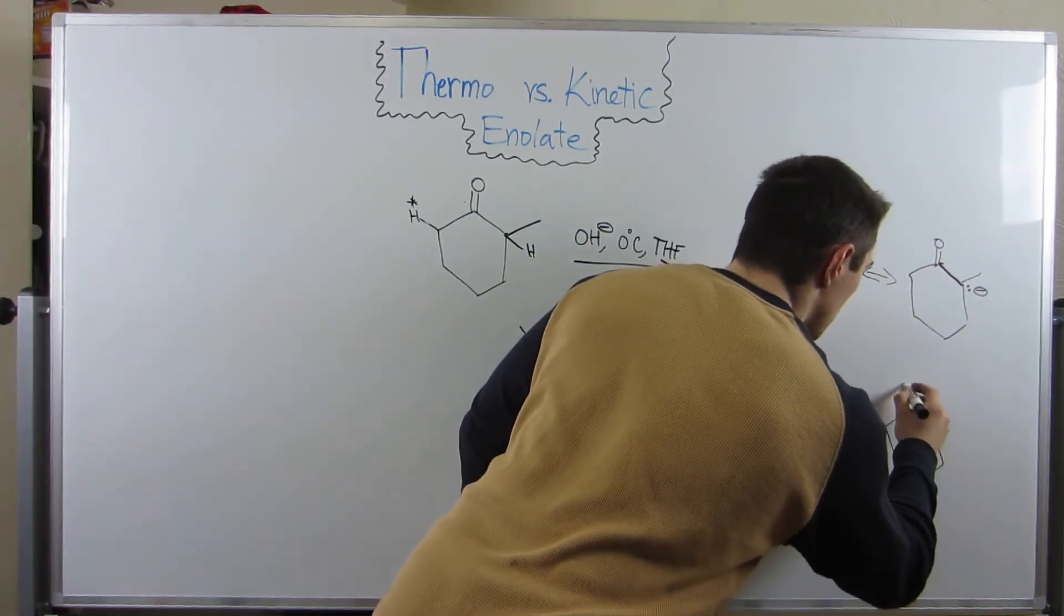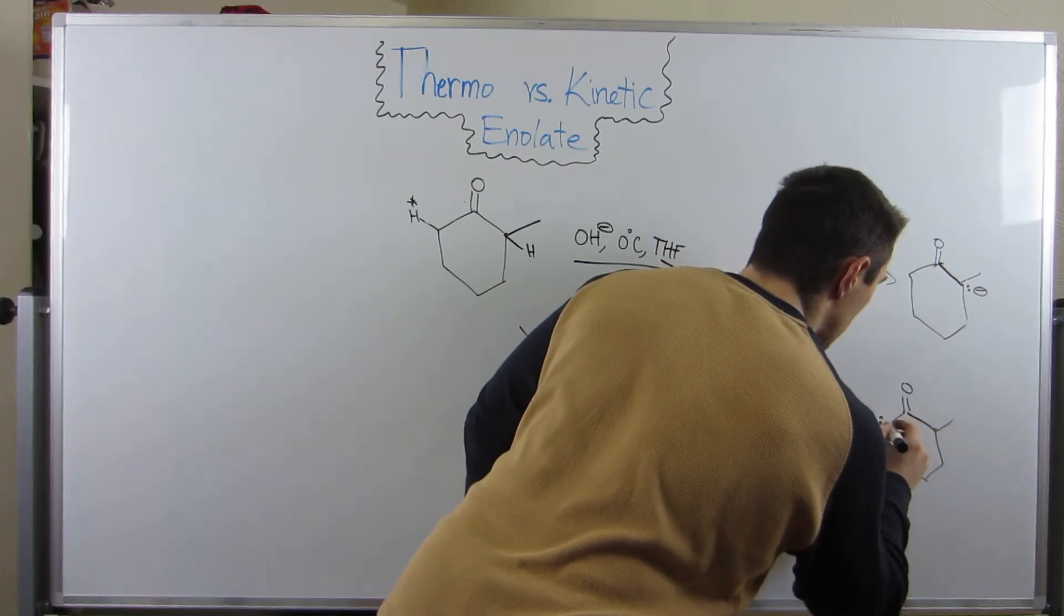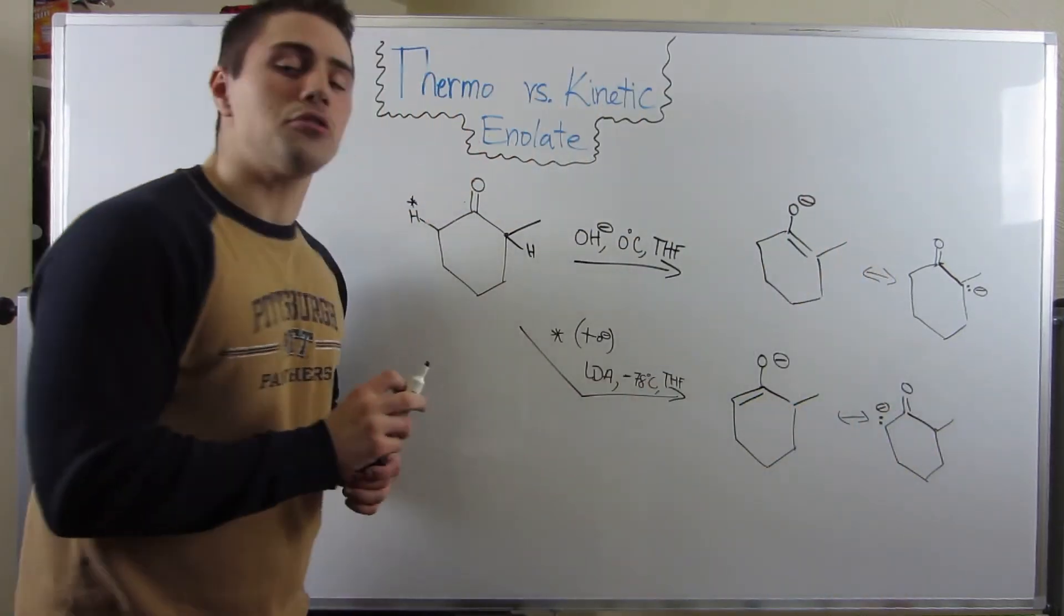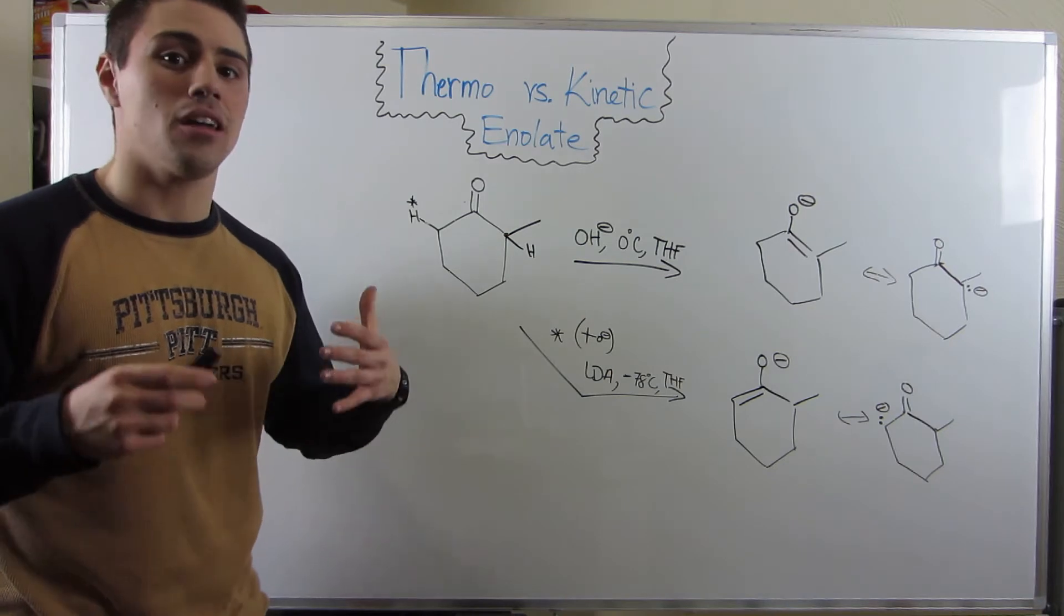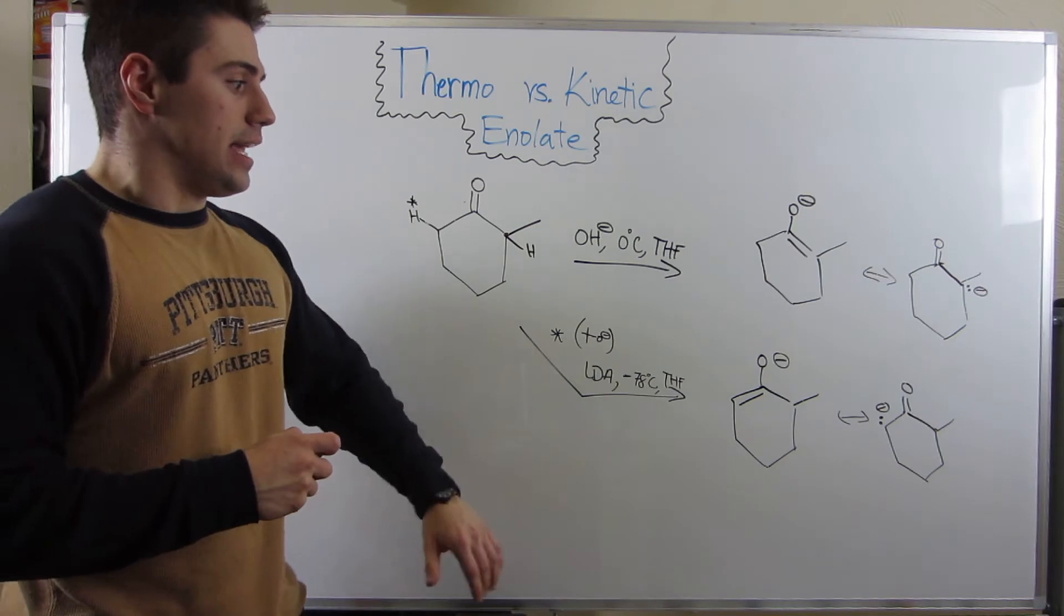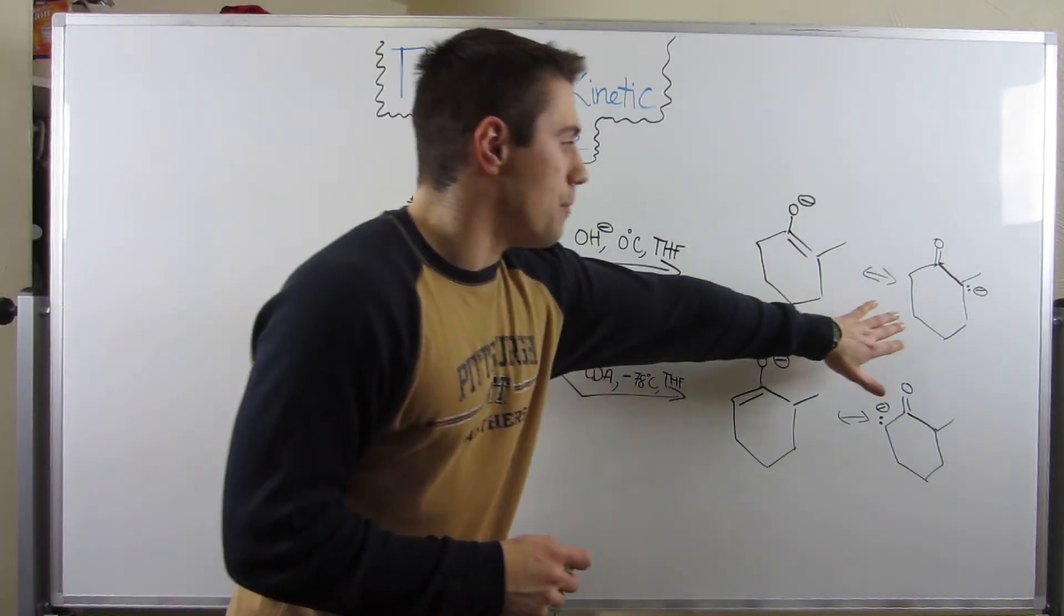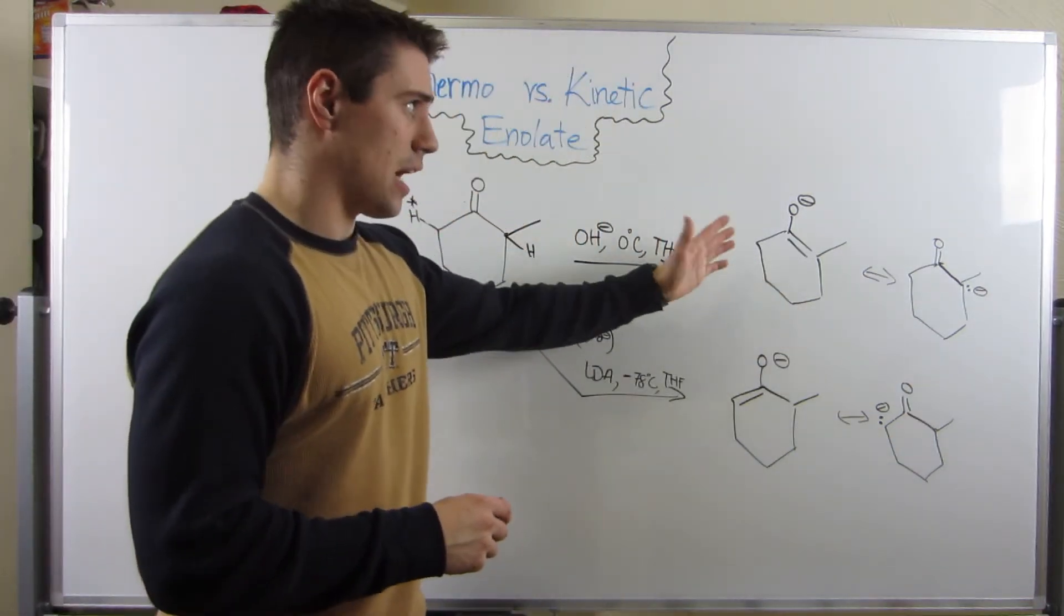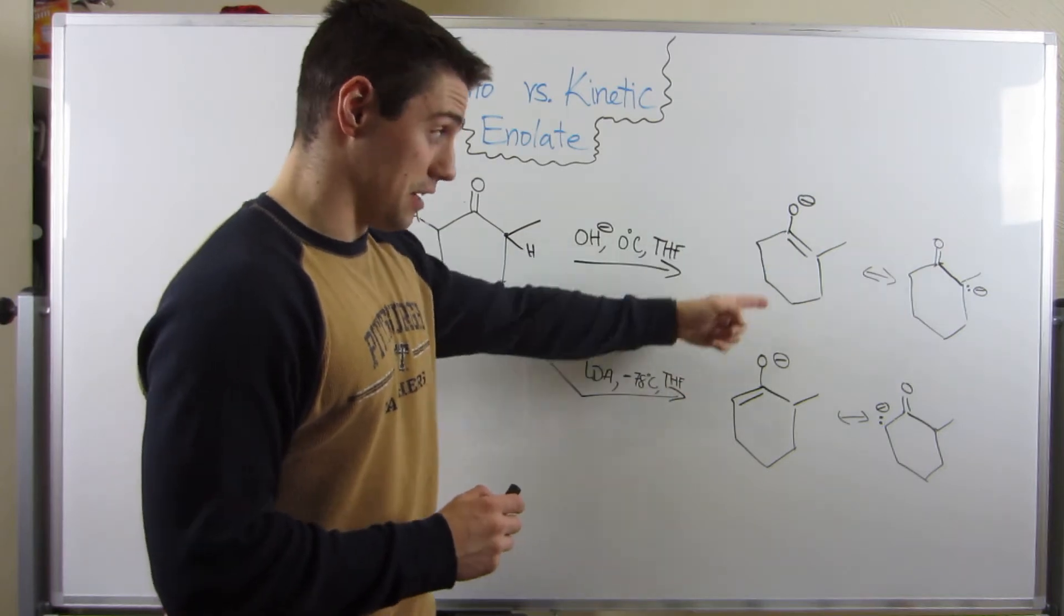Remember, we look like this as an enolate, but we also look like this with the alpha carbon bearing the lone pair as well. The reason I want you comfortable thinking of an enolate both ways is because these are nucleophiles. We're going to be attacking partially positive carbons with these structures. If you don't remember this structure, it's easy to think we're attacking with the oxygen.